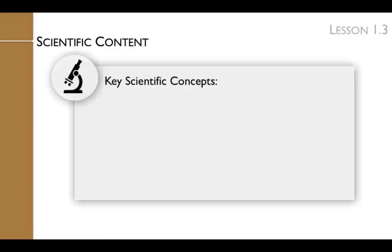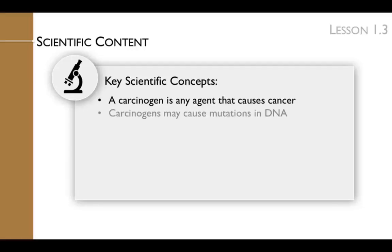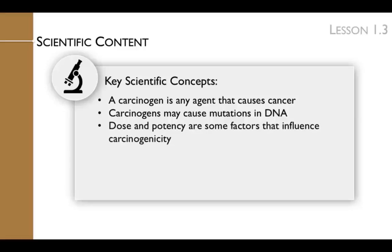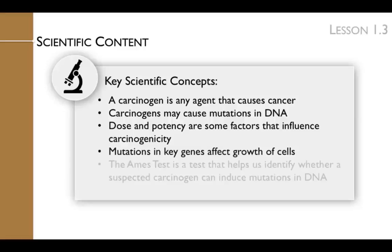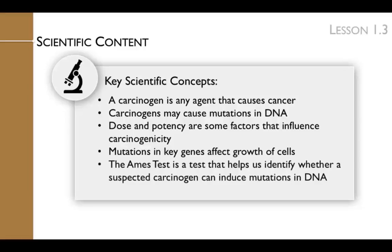To prepare for this lesson, you'll need to review the following key scientific concepts: the definition of a carcinogen, which is any agent that causes cancer; the relationship between carcinogens and mutations, which is that carcinogens may cause mutations in DNA; the factors that influence whether a substance is a carcinogen, such as dose and potency; the fact that mutations in key genes can affect the growth of cells; and the Ames test, which is a test that helps us identify whether a suspected carcinogen can induce mutations in DNA.